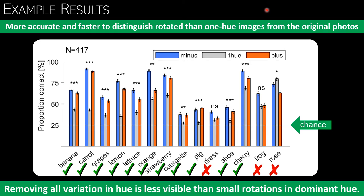Response times confirmed these results. And since the hue rotations were so tiny, also compared to discrimination thresholds, these results support the idea that observers could barely see the difference between original and one hue images.